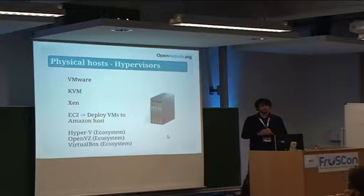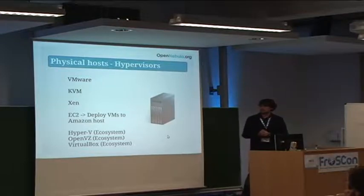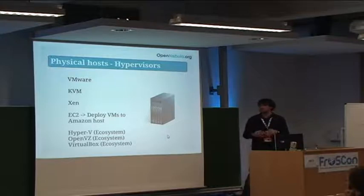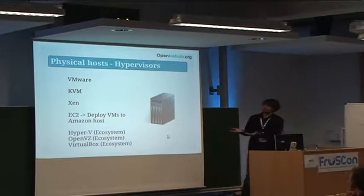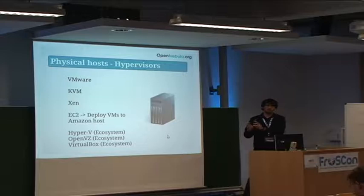We also support KVM and Amazon Cloud. If you have hosts in Amazon, you can add them to OpenNebula so you can see them, operate with them, and deploy your virtual machines to those hosts using OpenNebula. When using this, you are creating a hybrid cloud because you have your own hosts as part of your infrastructure, but you can also take part of the infrastructure from a public cloud provider like Amazon.